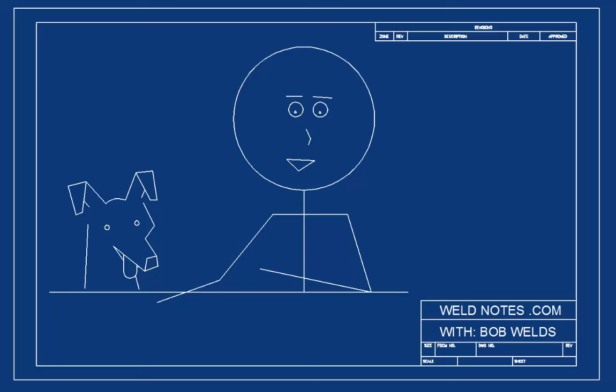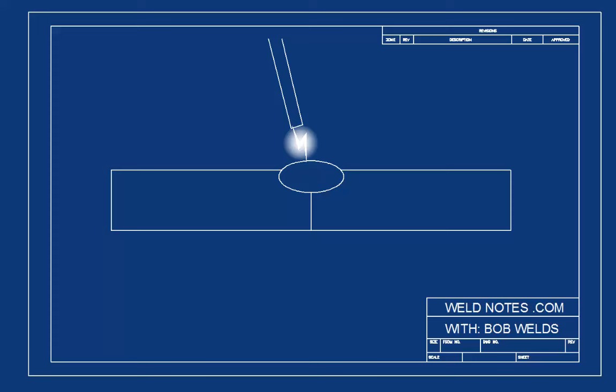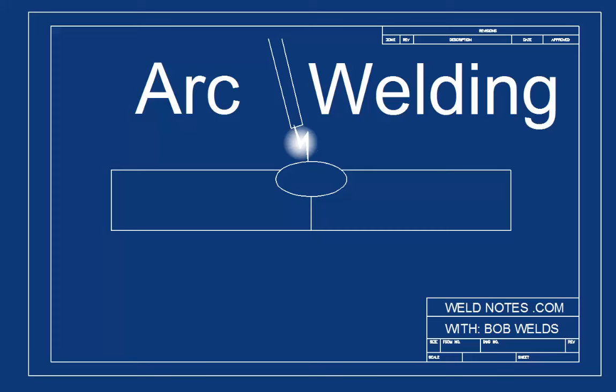Now electricity is another way to melt metal. The most common type of welding that uses electricity is called arc welding. Now there are three kinds of arc welding that are the most popular.